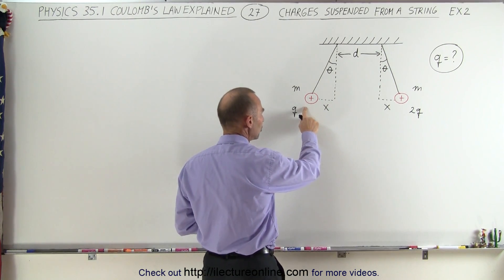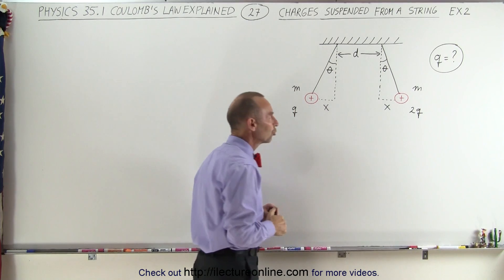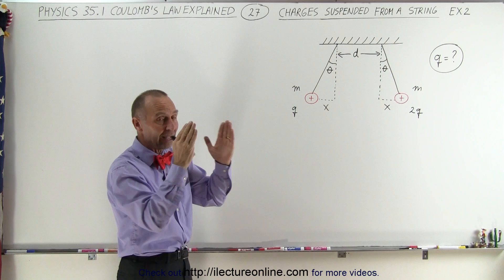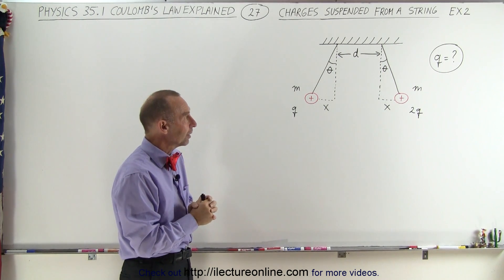The one on the left has charge q and the one on the right has charge 2q. Also, the two strings are not attached to the same point on the ceiling; they're attached at distance d apart from one another.